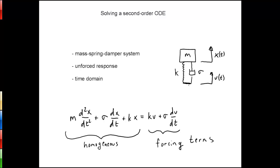We developed the differential equation, which has this form: m times the second derivative of x with respect to t, plus sigma times dx/dt, plus kx, is equal to the forcing terms, which are k times u plus sigma times du/dt. In this particular video, we are going to deal with the corresponding homogeneous problem, which is where we set the forcing terms on the right equal to zero.